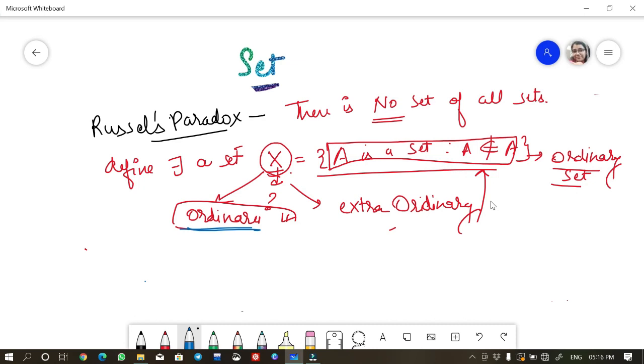So if it is ordinary set, the definition of ordinary set implies that it does not belong to the set. If it does not belong to the set, but the definition of the set is saying that all the set that does not belong to set should be inside X. So this implies X belongs to X. Can you see the contradiction you are having?